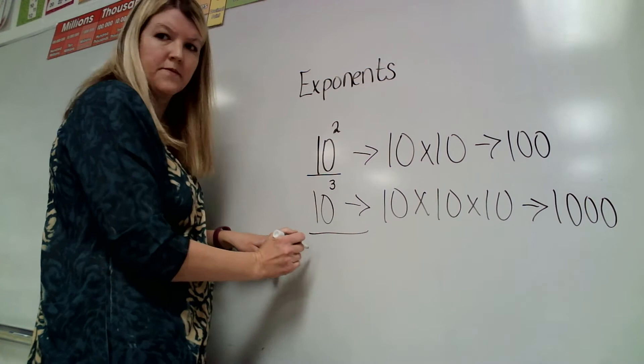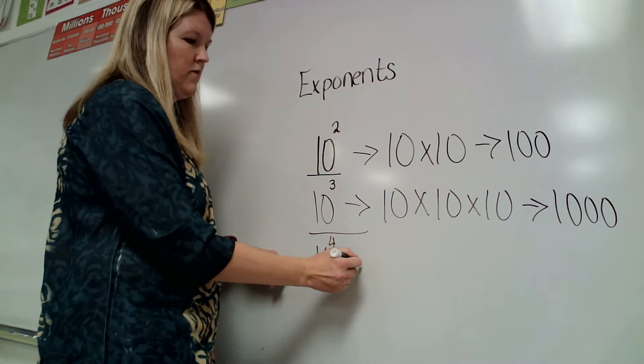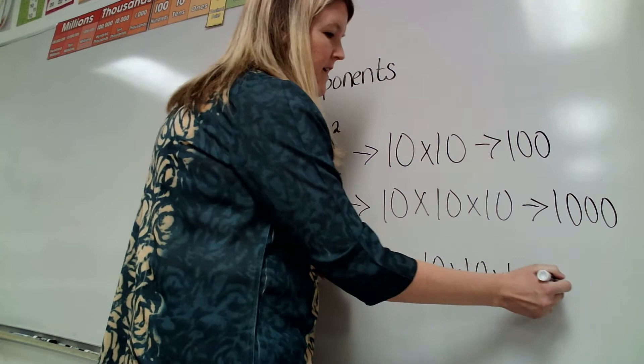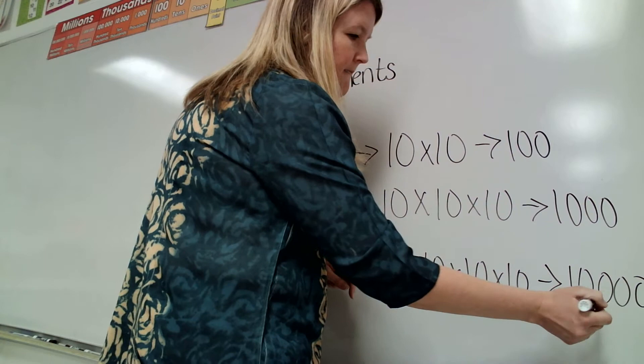Then if I had 10 to the 4th power, you can see the pattern here. We're going to multiply 10 times 10 times 10 times 10 – so we're doing it 4 times. And then that gives me 10,000.